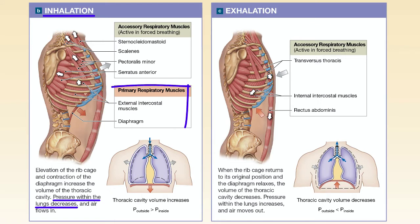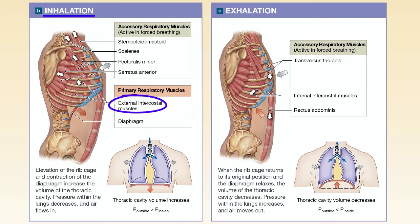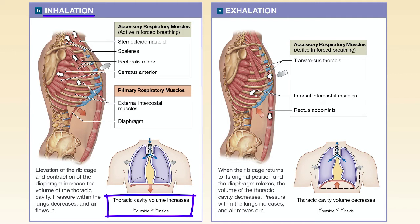Why? Because the primary muscles for inhalation — the diaphragm and external intercostal muscles — increase the volume of the thoracic cavity. The diaphragm, the dome-shaped muscle on the floor of the thoracic cavity, contracts and is forced downward. Meanwhile, the external intercostal muscles contract and pull the ribs up and outward. These two actions raise thoracic cavity volume, which in turn lowers thoracic cavity pressure. Air is pushed into the lungs by the higher atmospheric pressure.